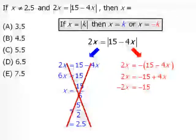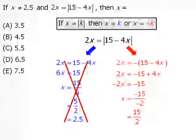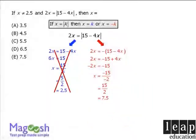Now we'll divide both sides by negative 2. We can simplify this to be 15 halves, which is equal to 7.5. So our answer here is e.